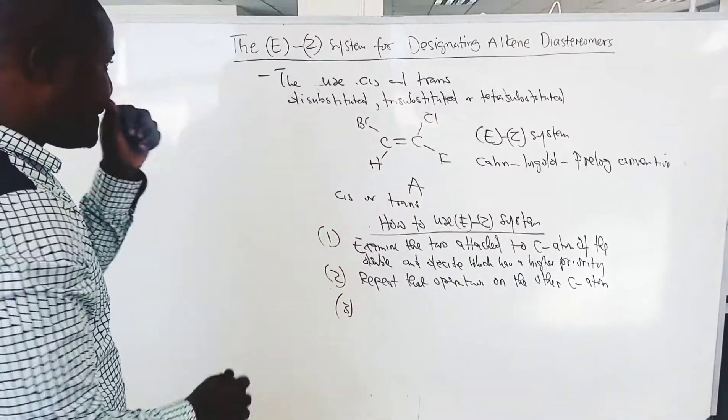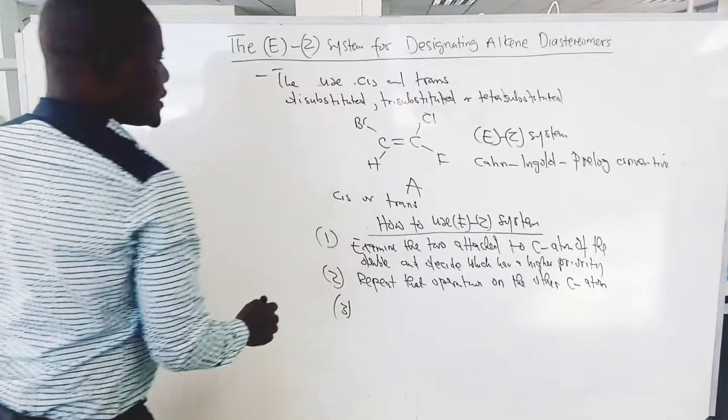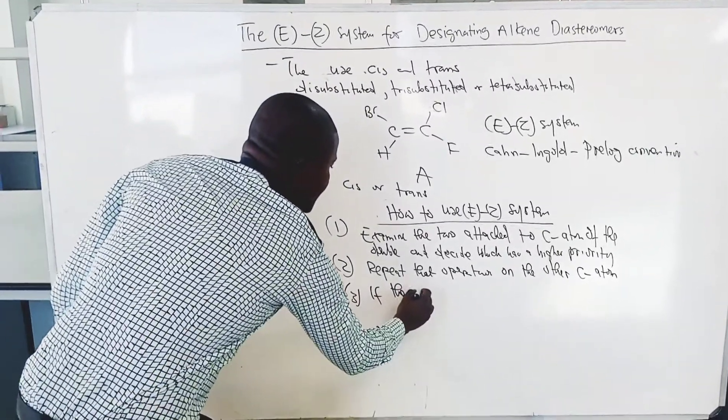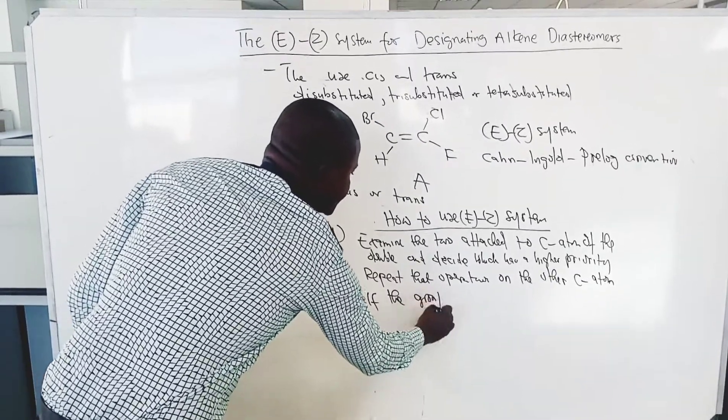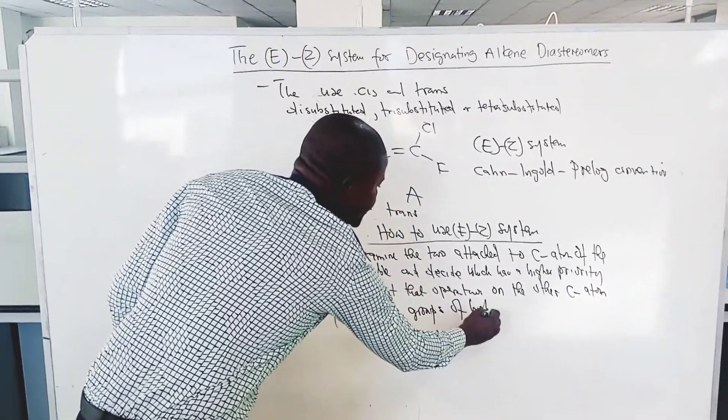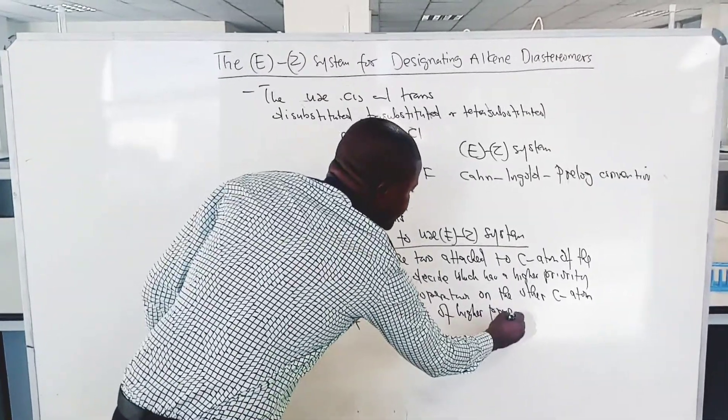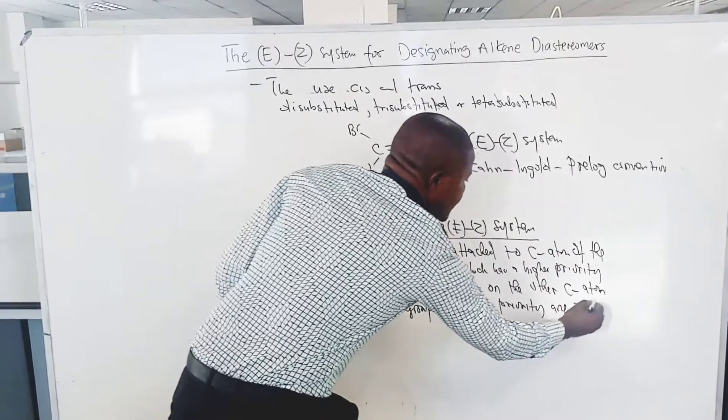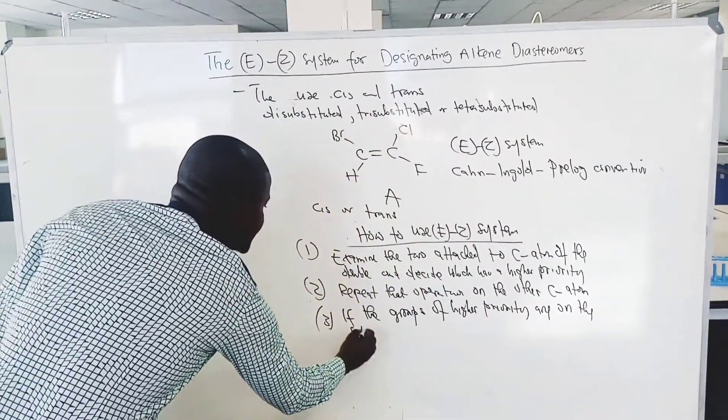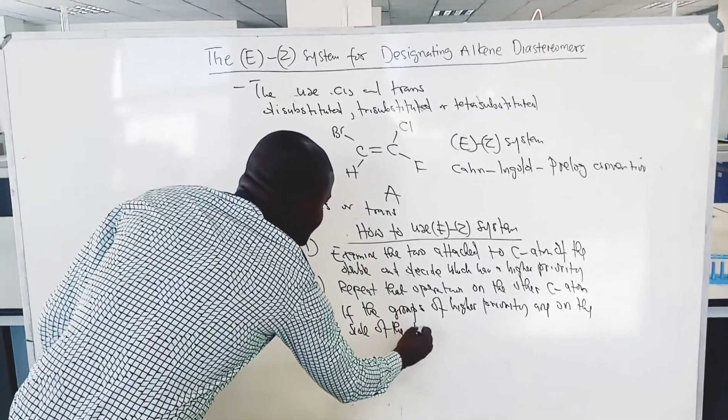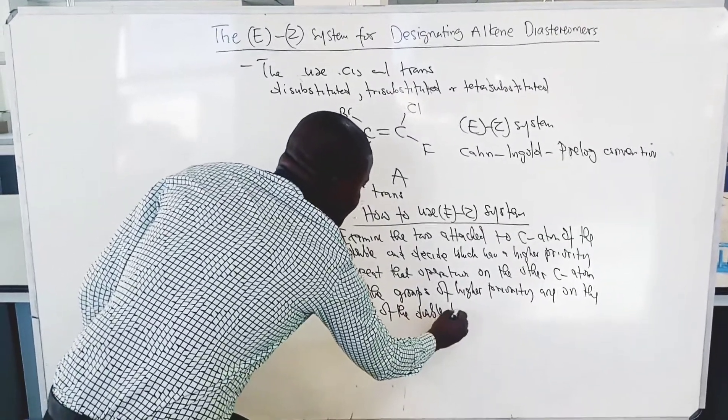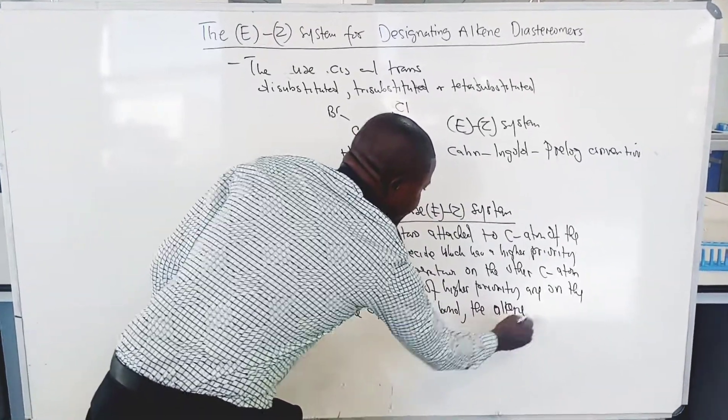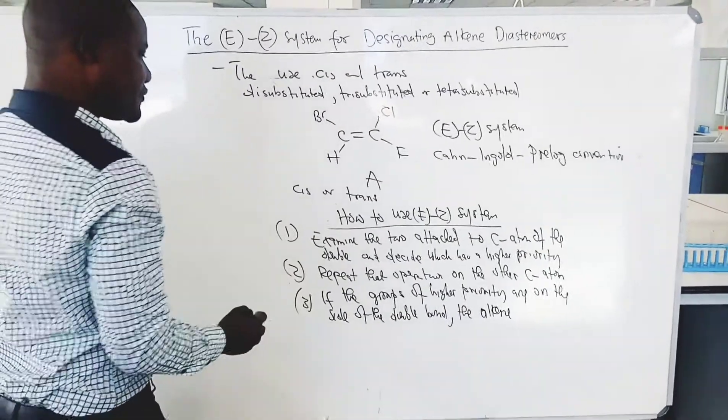Step three, if the groups of higher priority are on the same side of the double bond, the alkene is designated Z.